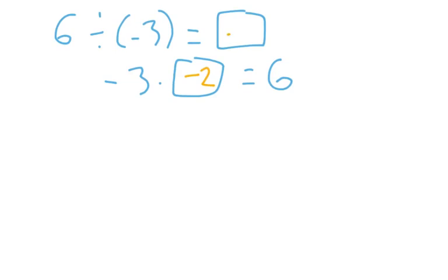Negative 3 times negative 2 is positive 6. So what goes in the box here is negative 2. And that's going to illustrate the fact that if you take a positive number divided by a negative number, you get a negative number.